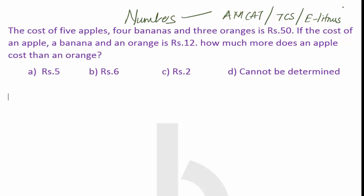Now let's try to see what the question is talking about. Here it says the cost of 5 apples, 4 bananas and 3 oranges is Rs.50. If the cost of 1 apple, 1 banana, and 1 orange is Rs.12, then it is asking you how much more an apple costs compared to an orange.